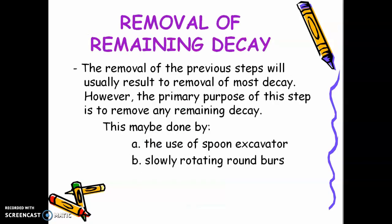Number five is removal of remaining decay. The removal from the previous steps will usually result in removal of most decay. However, the primary purpose of this step is to remove any remaining decay. This may be done by the use of a sharp spoon excavator or a slowly rotating large round burr.